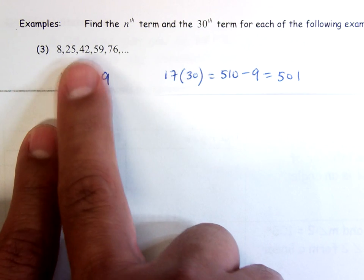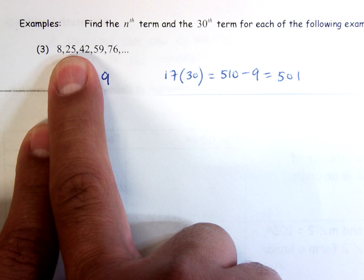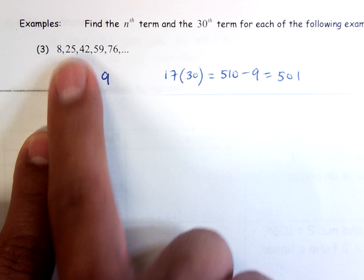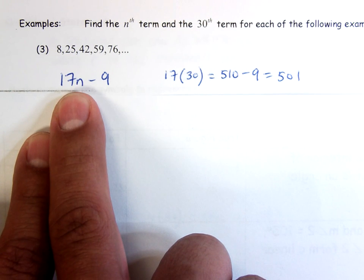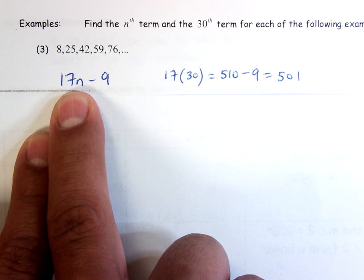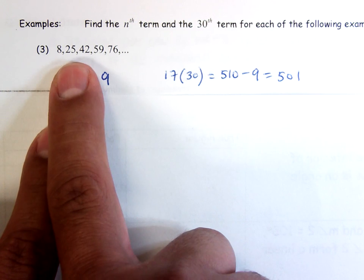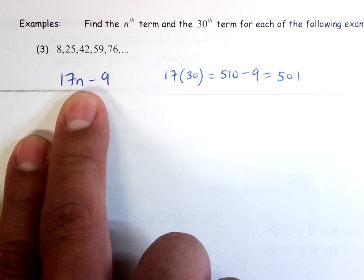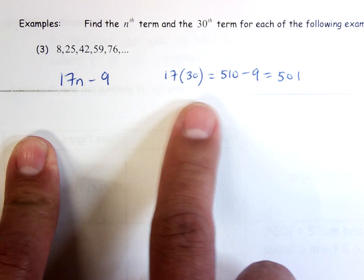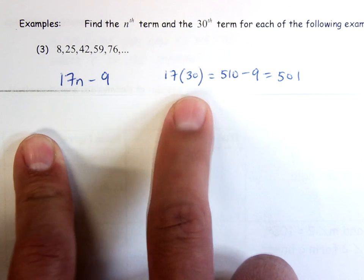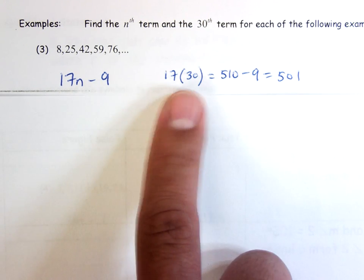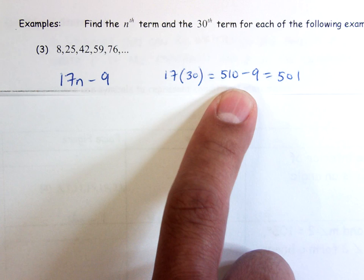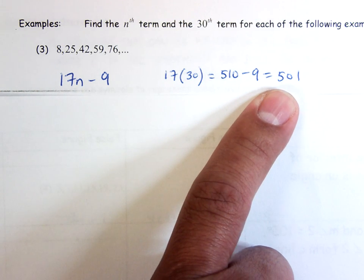Notice the second term: if n equals 2, then 17 times 2 is 34, and 34 minus 9 equals 25 — correct. That's how we find the nth term. To find the 30th term, plug in 30 for n: 17 times 30 equals 510, minus 9 equals 501.